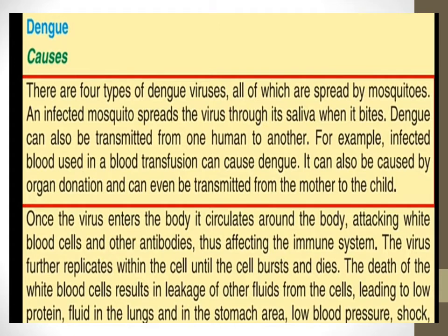These are the main causes of how dengue is spreading in our society. Once a virus enters the body, it circulates around the body attacking white cells. In dengue, the white cells are affected — this is different from malaria, where the virus damages the red blood cells. In dengue, the patient's white cells are affected, resulting in leakage of fluid or cells.